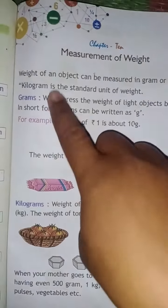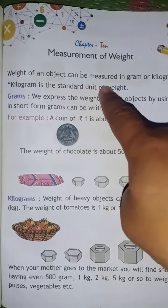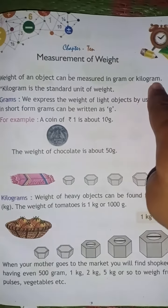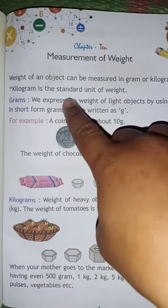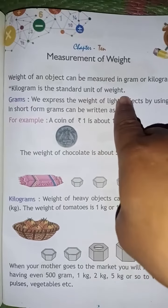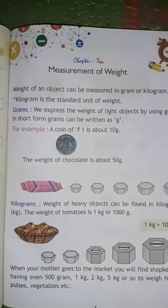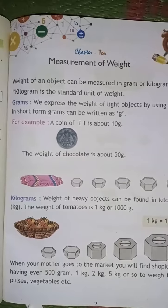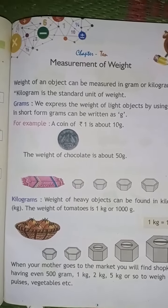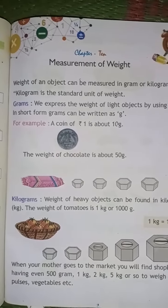Weight of an object can be measured in grams or kilograms. Kilogram is the standard unit of weight.